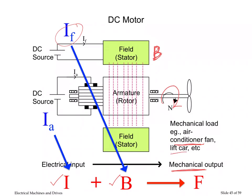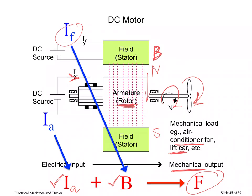A motor is very useful — you can move things, power the air conditioner, provide motion. Trains are actually driven by electrical motors, so motors are very, very useful. The way it works is you provide armature current in the armature coil of the motor or rotor. In the presence of a magnetic field, the north-south flux is cut, and with these two ingredients — armature current and magnetic field — the motor starts to rotate, generating mechanical force.